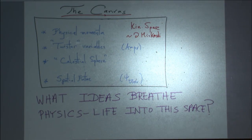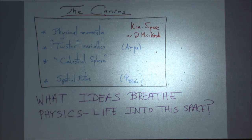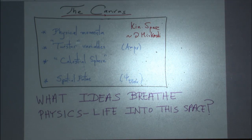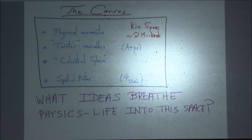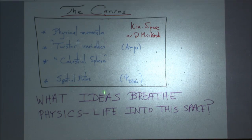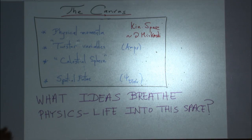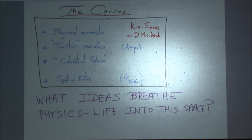Can there be something else? Just as a function of spatial momenta — nothing could seem more boring — but can you ask a question in the space of spatial momenta whose answer gives cosmological correlators or the wave function of the universe? That's what I'll be talking about today. For both amplitudes and cosmology, the canvas is one way or another of labeling the variables the observable depends on: physical on-shell momenta, twistor variables, or points on the celestial sphere for scattering amplitudes; the spatial future in position or momentum space for the wave function of the universe.